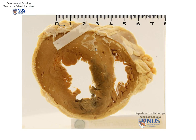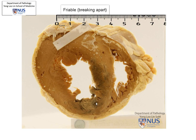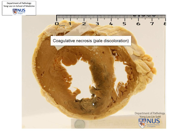This is a specimen of a heart that is transversely sectioned through the left ventricle and the right ventricle. We can see over this area at the antero-septal region of the left ventricle wall that there is this area of pallor. It is irregular, looks a little bit friable — meaning it's crumbling a little bit — and there are some foci of darker, blackish hemorrhage within this region. This is a classical appearance of coagulative necrosis.